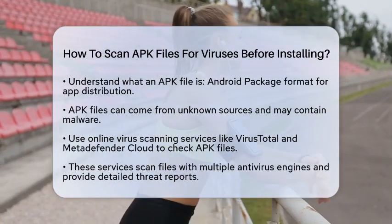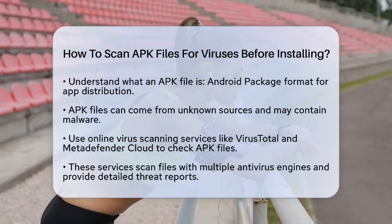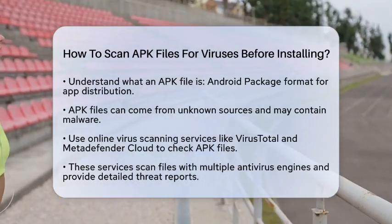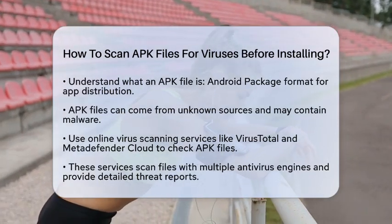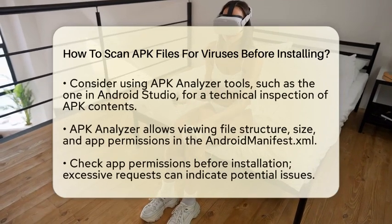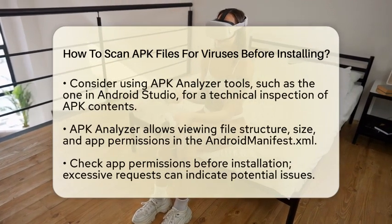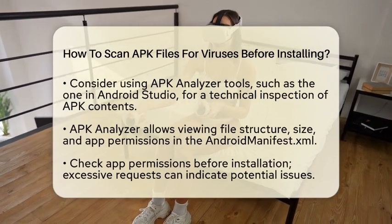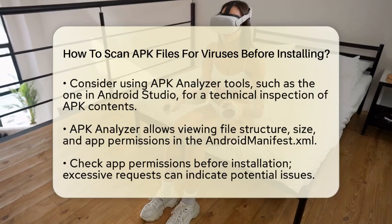One of the simplest ways to check an APK file for viruses is by using online virus scanning services. Websites like VirusTotal and MetaDefender Cloud allow you to upload the APK file. These services use multiple antivirus engines to scan the file thoroughly and provide a detailed report on any detected threats. For instance, VirusTotal shows how many antivirus tools flagged it as malicious, and MetaDefender Cloud works similarly, giving you a comprehensive scan using various antivirus engines.